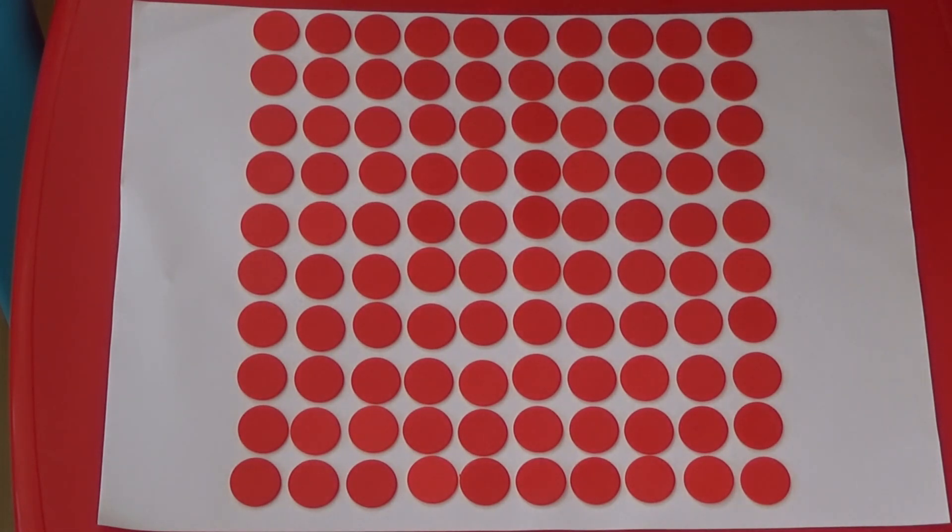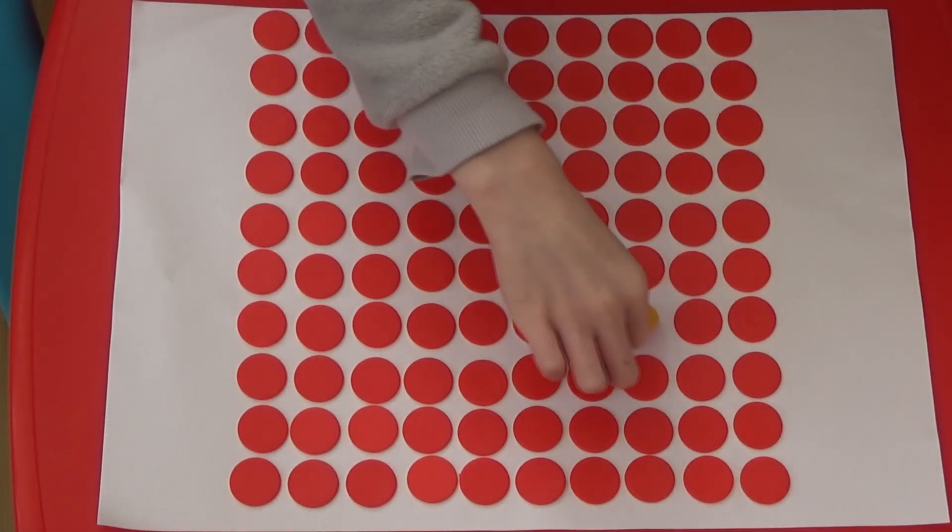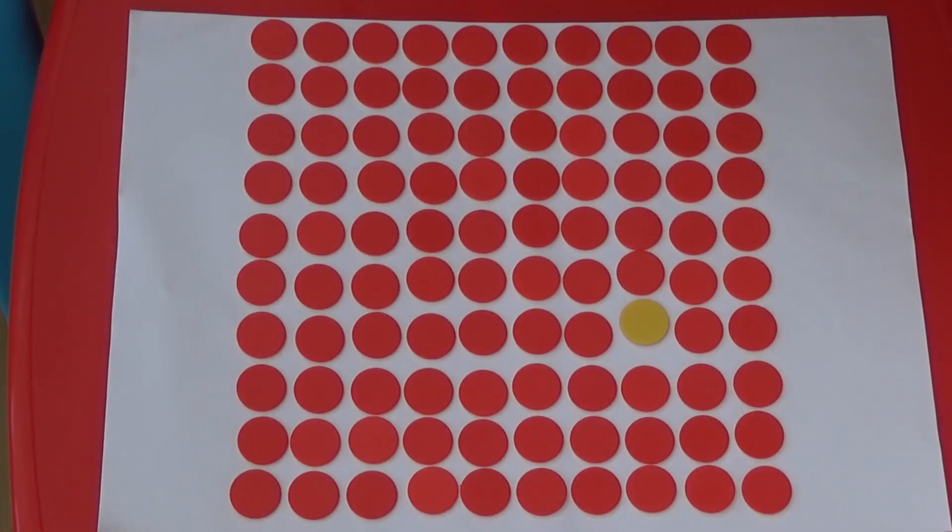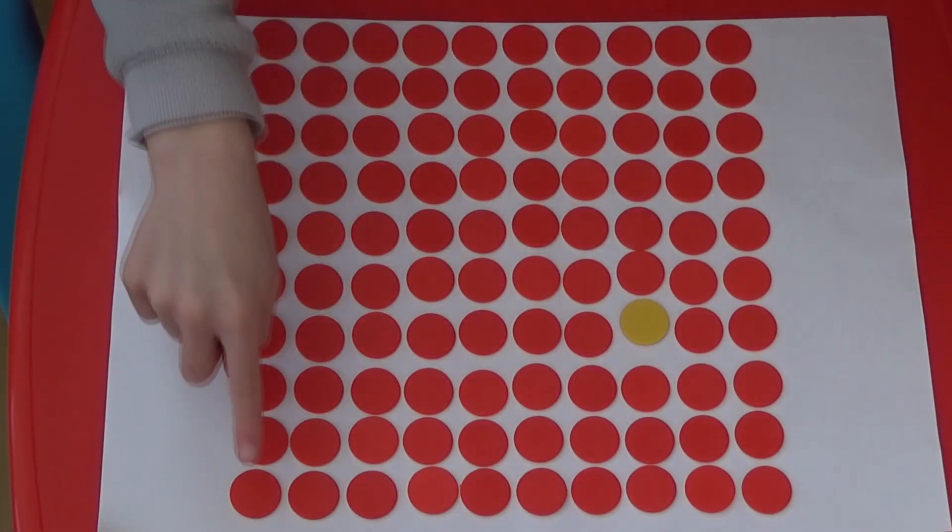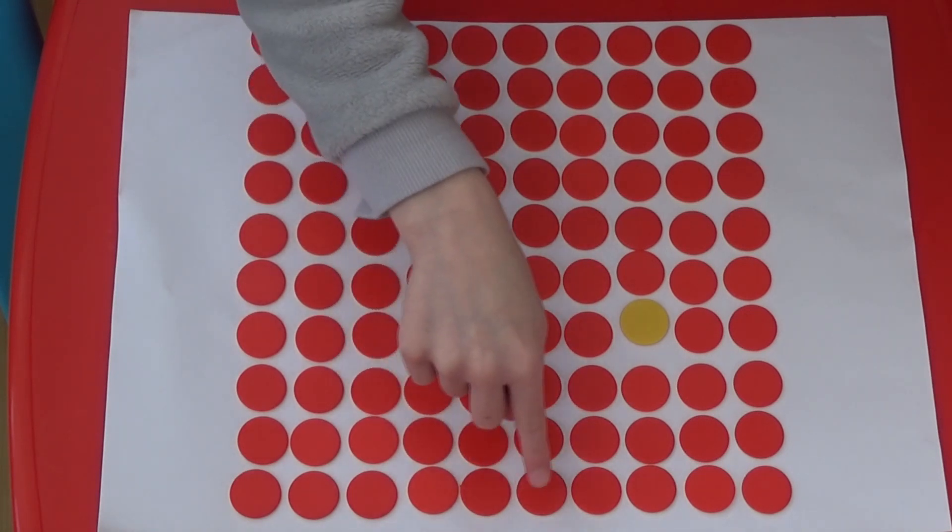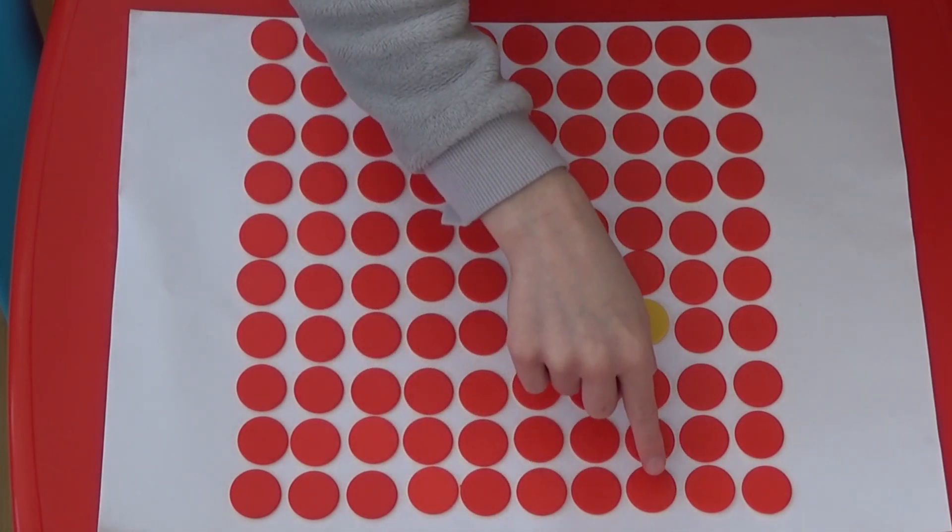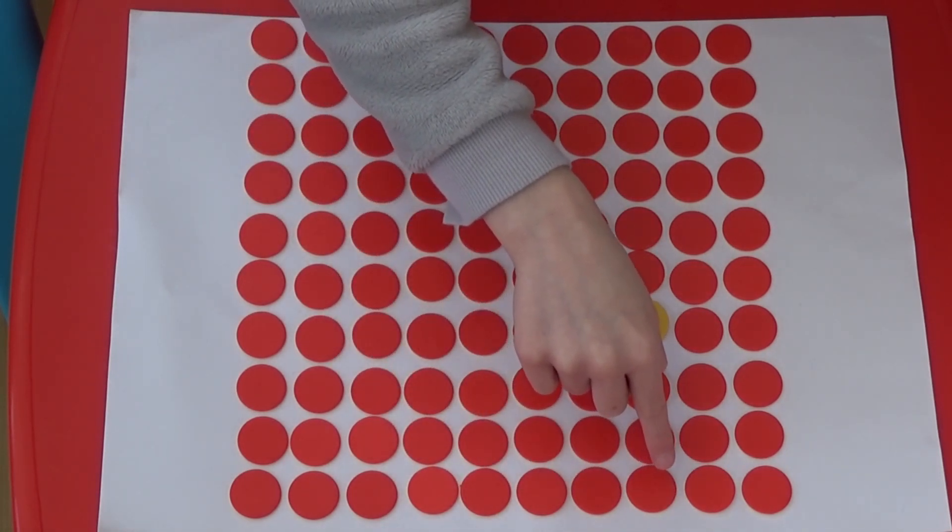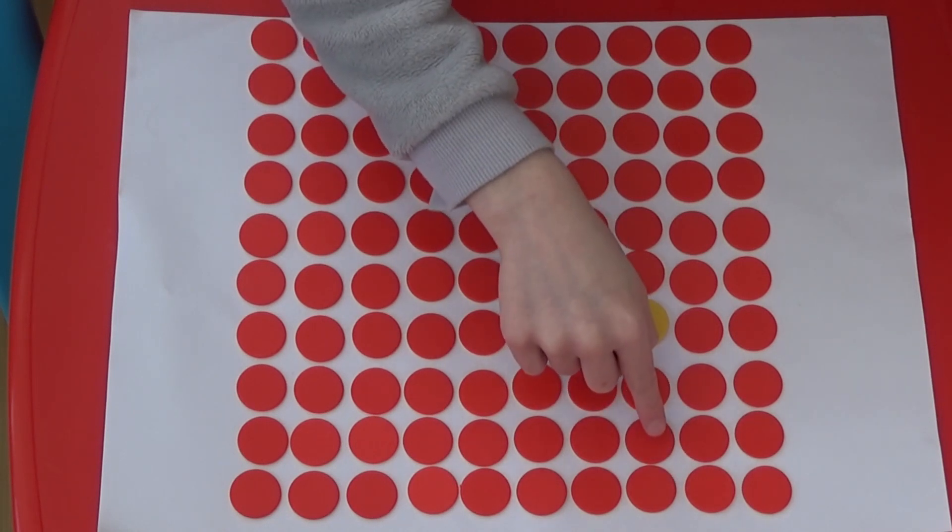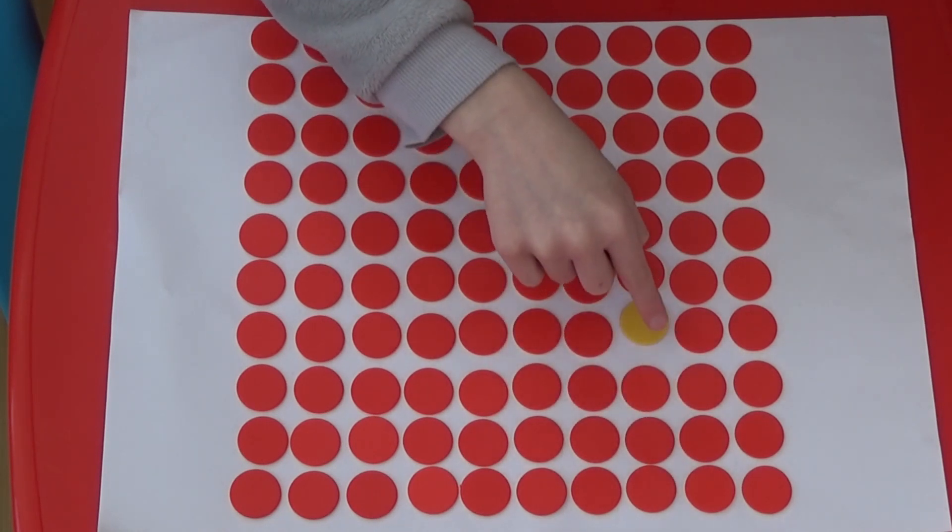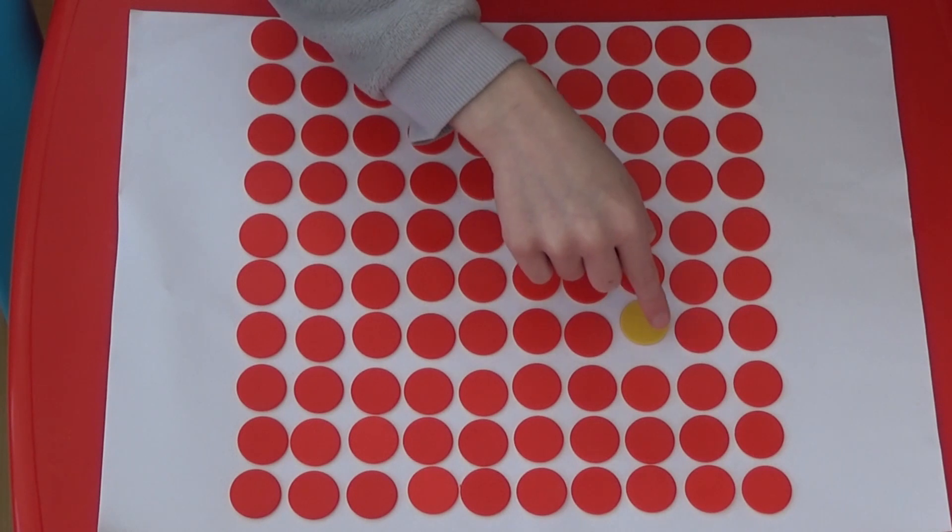we can work out what number any of the counters represent. Turn over one of the counters and work out what number it is. Here my counter is one, two, three, four, five, six, seven, eight across and if I go up this would be eighteen, twenty-eight and thirty-eight so my counter must be thirty-eight.